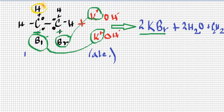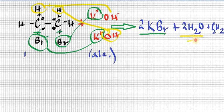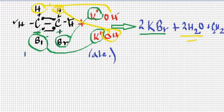Next, the bonds between hydrogen and carbon also break, freeing the electrons back to the carbon atoms. The free hydrogen ions bond with the OH⁻ ions from potassium hydroxide, forming two molecules of water. The electrons now free on each carbon bond with each other, forming the triple bond of ethyne (C₂H₂). This is another preparation of ethyne gas.